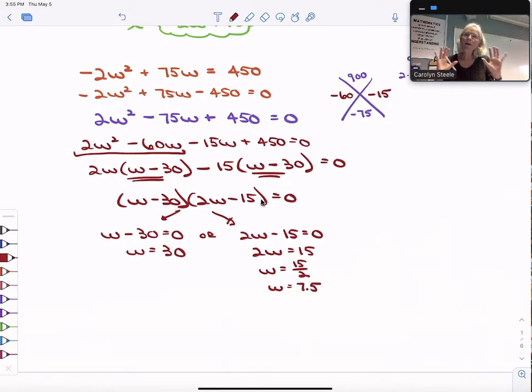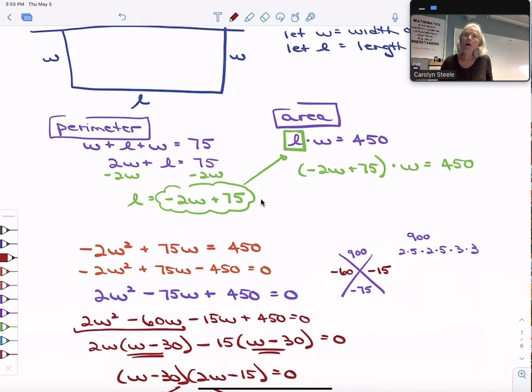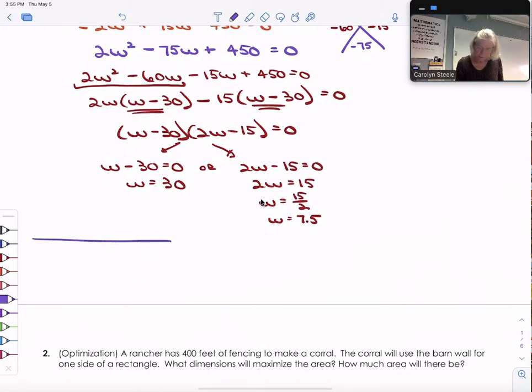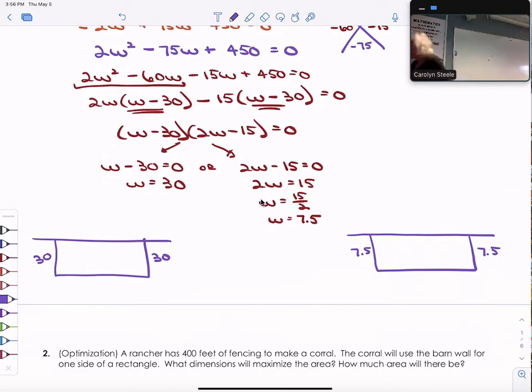All right, so we have two possibilities. Let's go back and think. Two possibilities for this playground. And for this playground, one possibility, here's the wall, is for our widths to be 30. And the other possibility is for our widths to be 7.5. Now hold on, I'm going to grab something. I want to get my calculator. When solving these problems, always feel free to use a mechanical calculator for this.